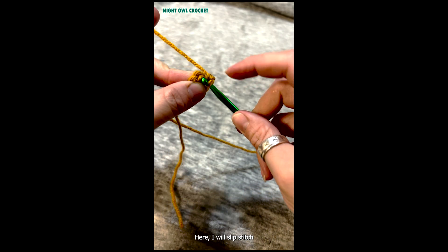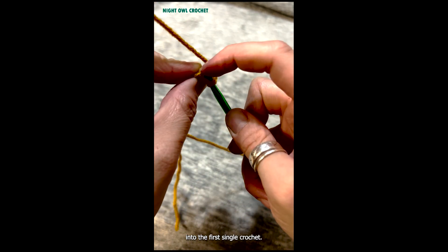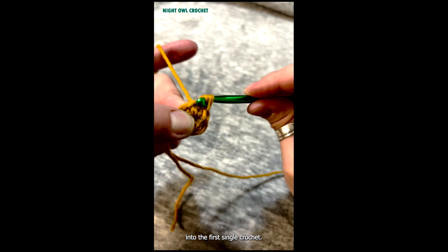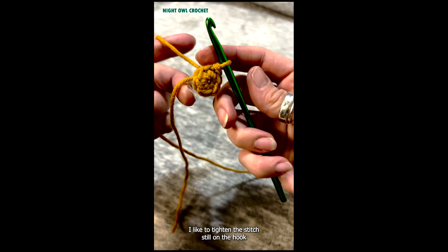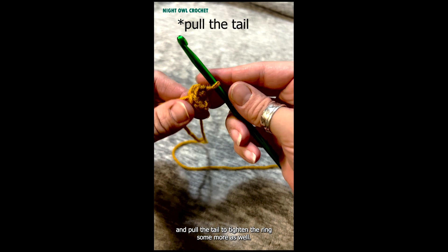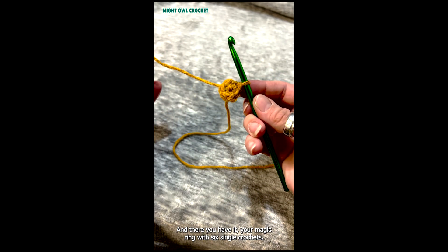Here I will slip stitch into the first single crochet. I like to tighten the stitch still on the hook and tighten the tail to tighten the ring some more as well. And there you have it, your magic ring with six single crochets.